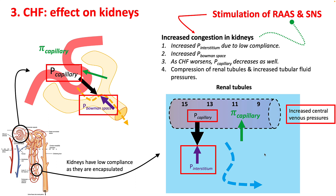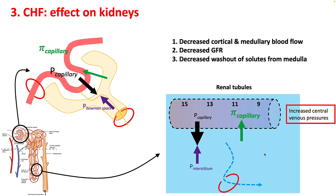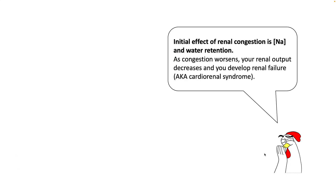Understand that kidneys have low compliance because they're encapsulated, so the pressure rise in the kidneys is much faster. This will cause decreased cortical and medullary blood flow, decreased GFR, and decreased washout of solutes from the medulla, resulting in decreased urine output and renal failure. The initial effect of renal congestion is salt and water retention, which further worsens congestion, eventually leading to renal failure — also known as cardiorenal syndrome.